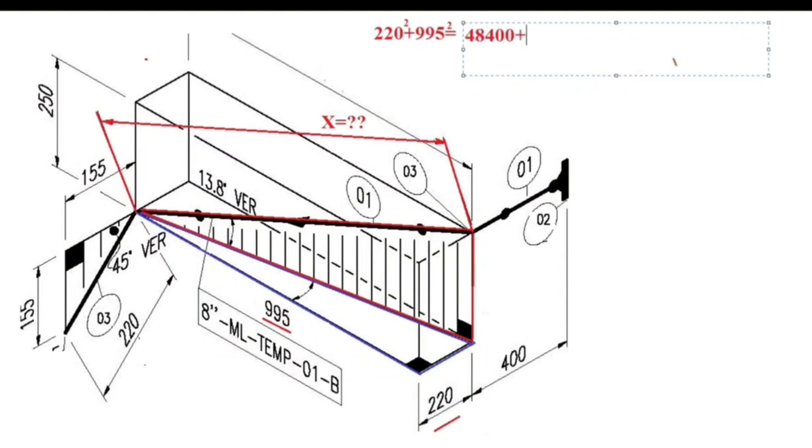We calculate and find that the length of the hypotenuse of the blue triangle will be 1019. And at the same time, 1019 is the cathetus of the red triangle.